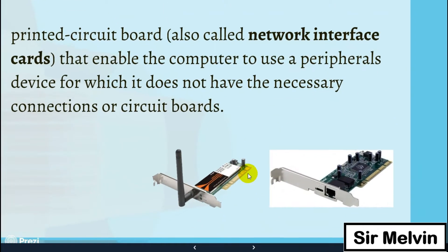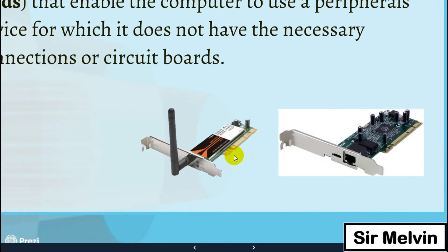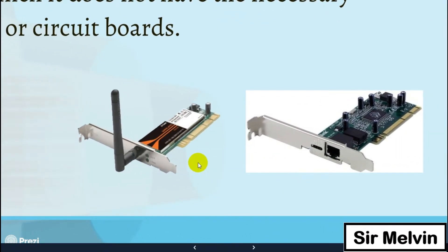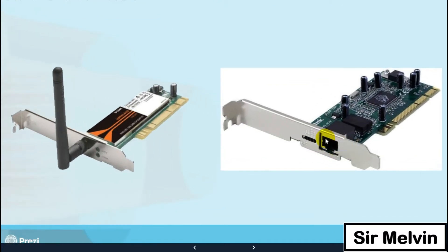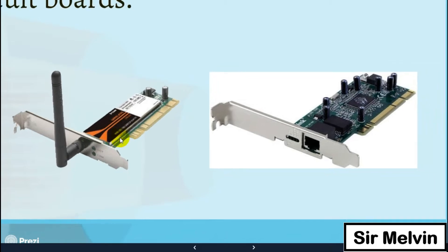The example shown is the NIC or network interface card. There are two types shown: one is the wireless NIC, and the other uses a LAN cable port for wired connectivity.